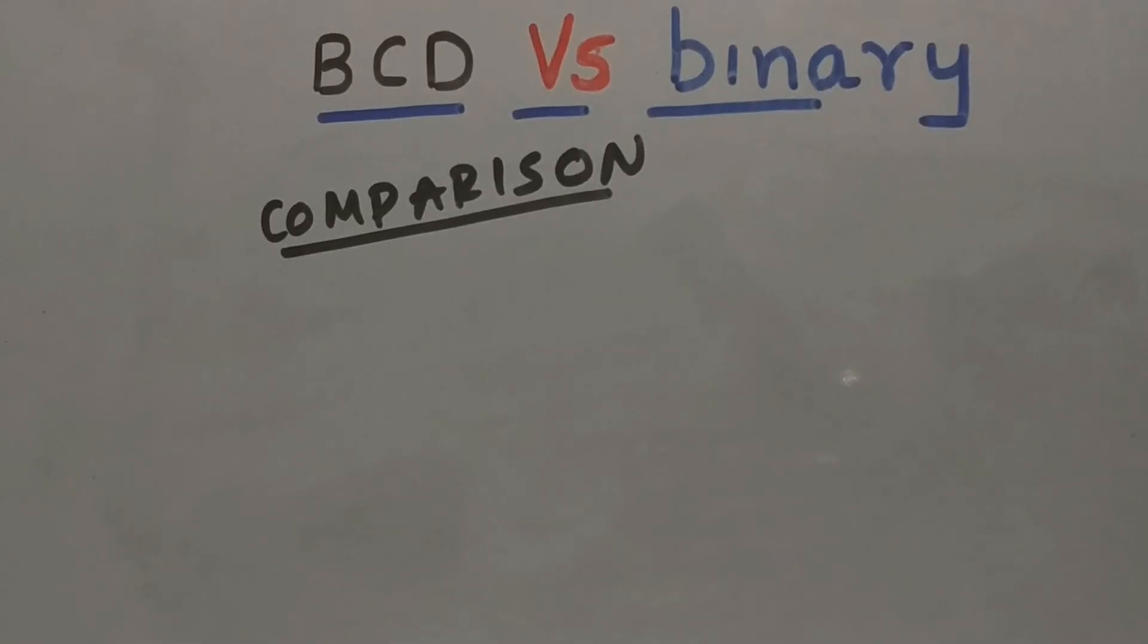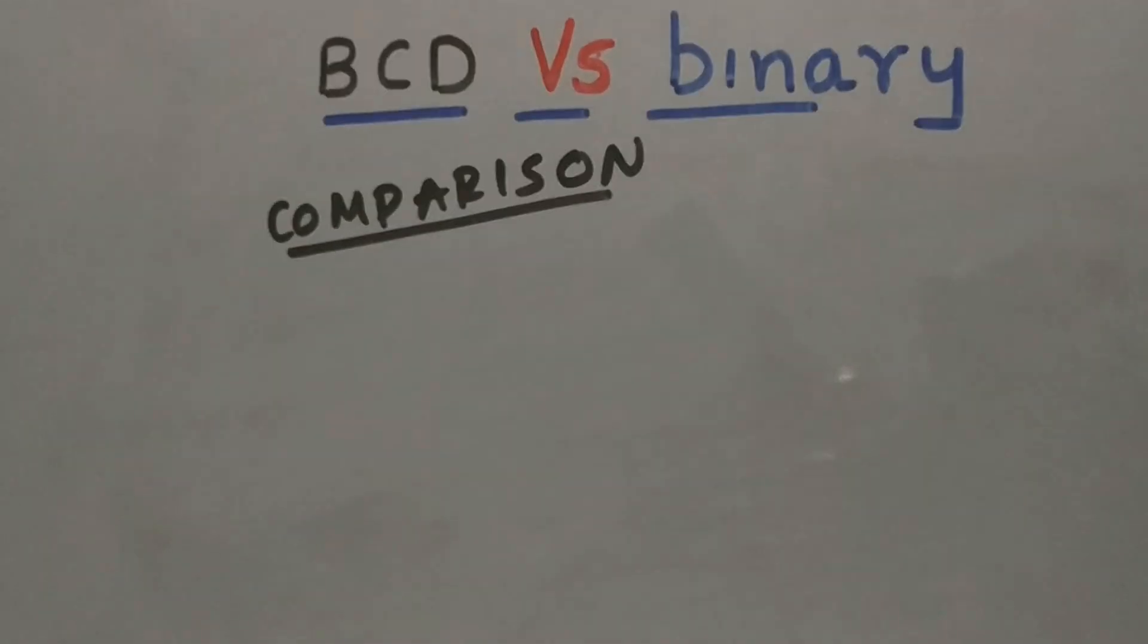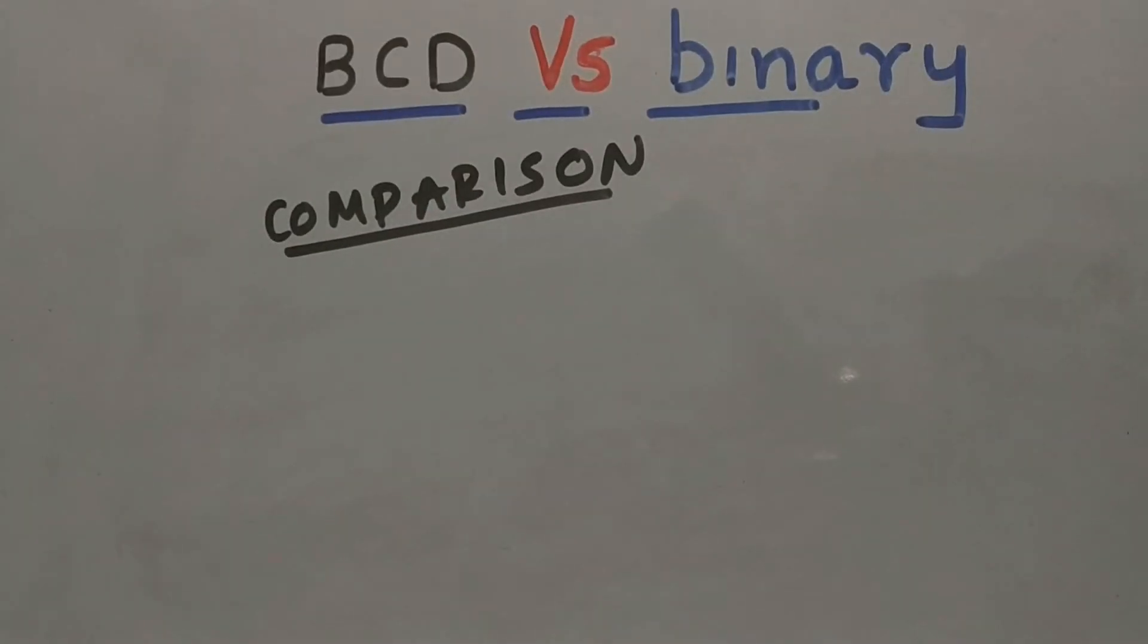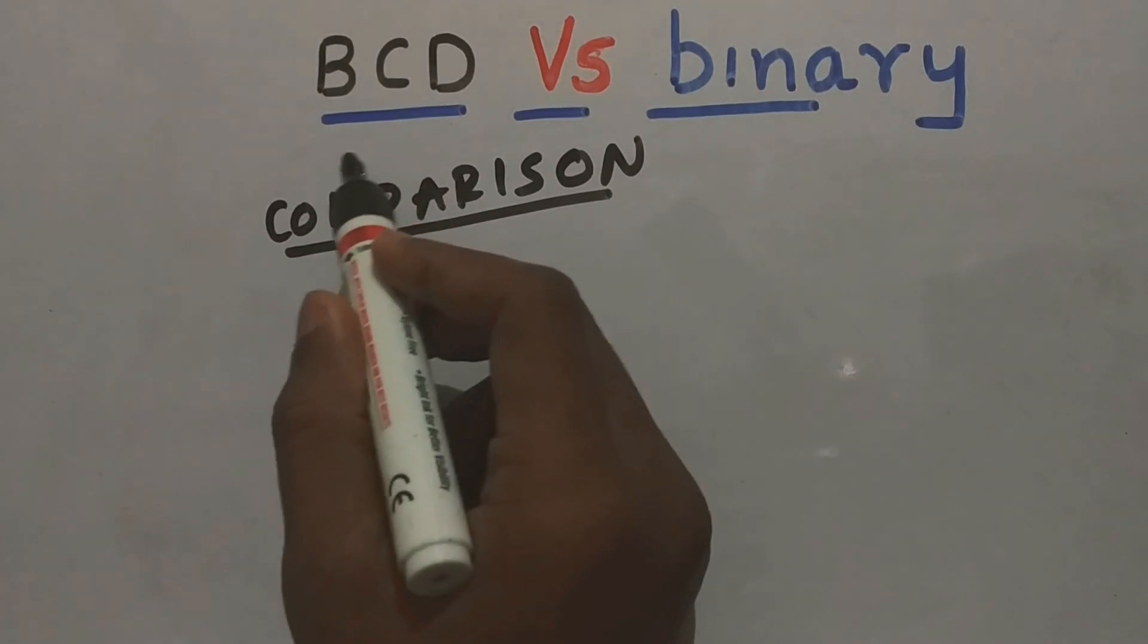Understand this. Now let us compare the differences between BCD versus binary. It is important to realize that BCD is not a number system like binary or decimal or hexadecimal. In fact, we are representing our decimal system in a BCD code.